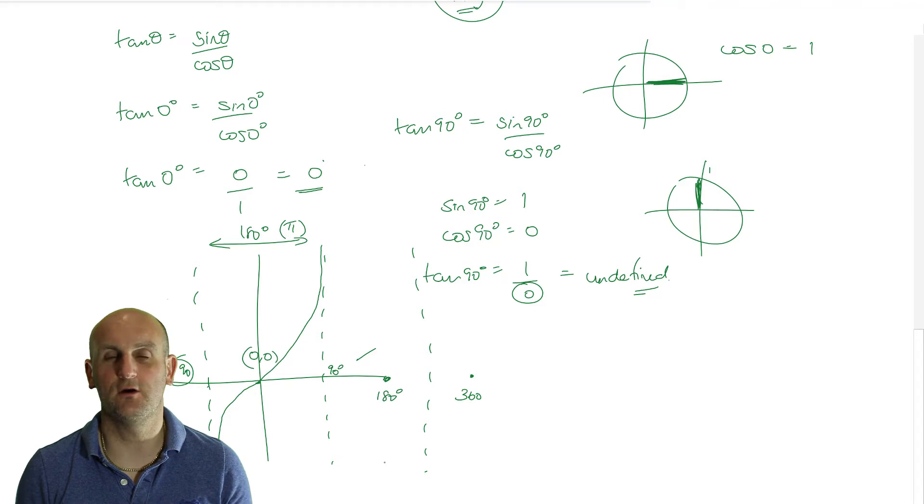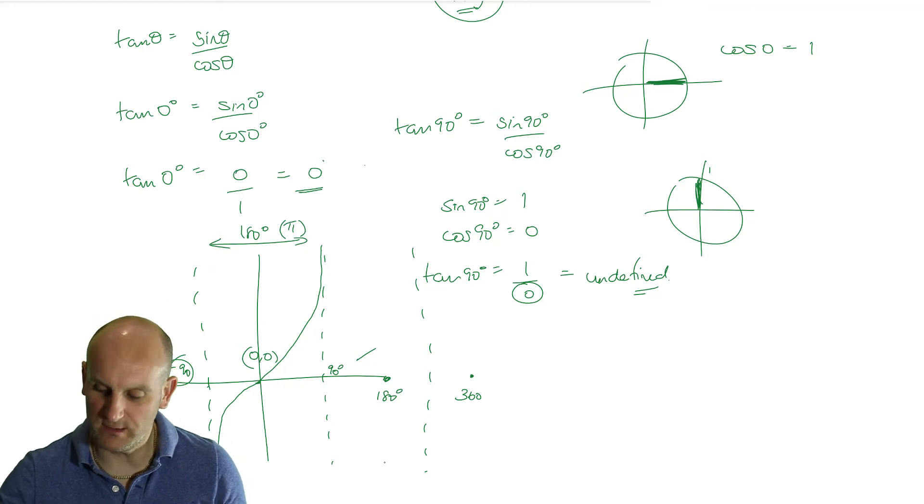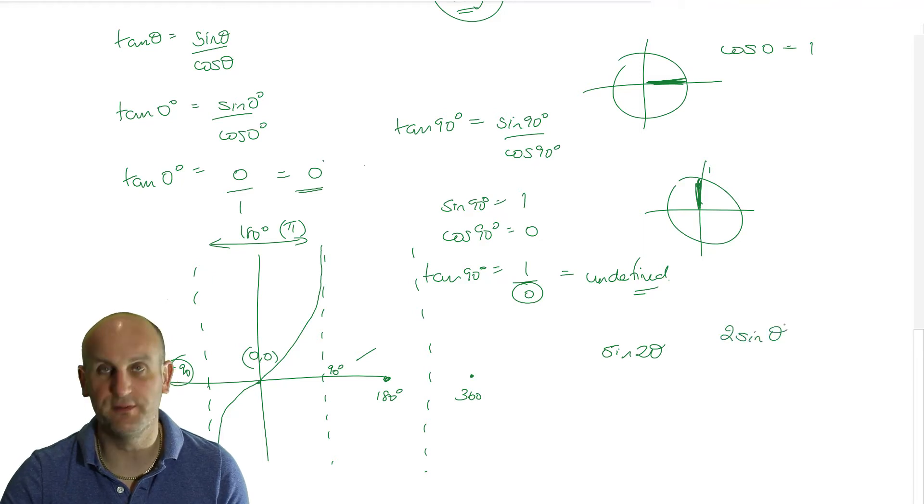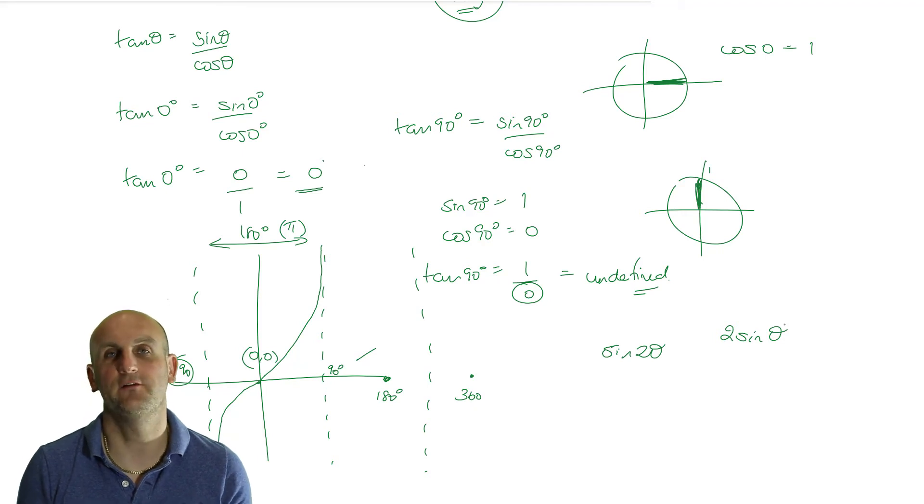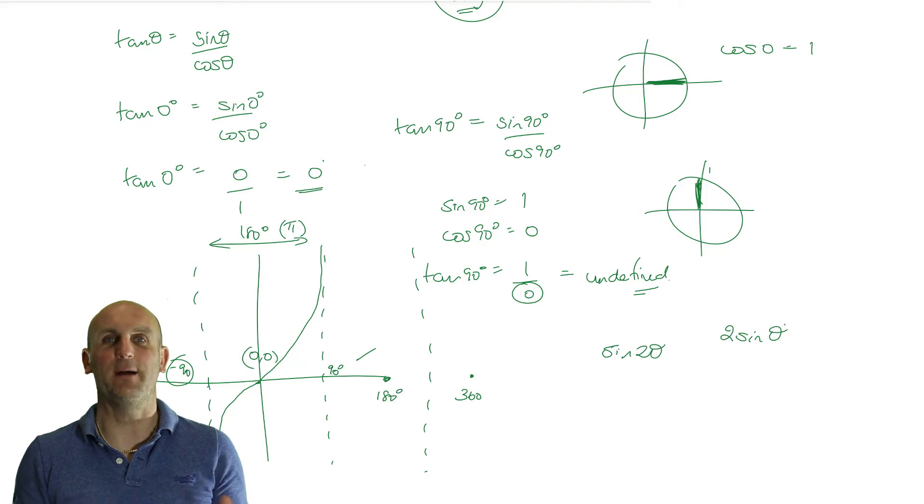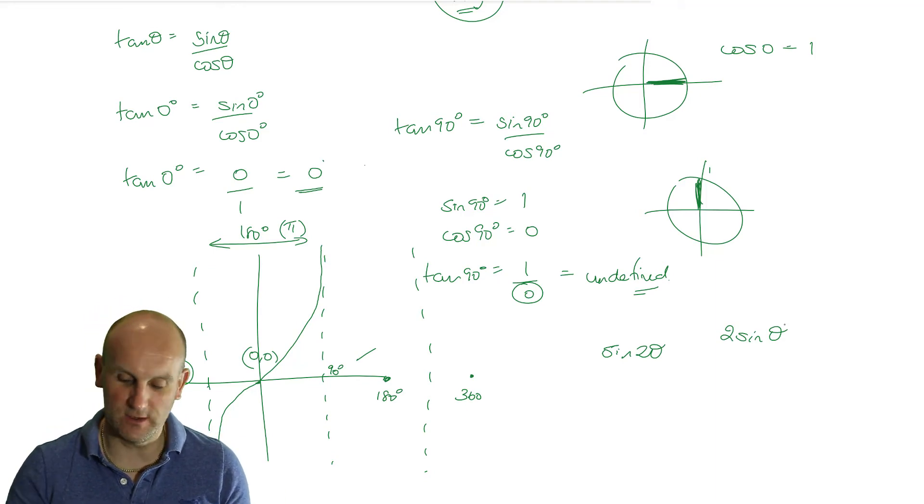Now my advice to you is go to Desmos.com and play with the sine, the cosine and the tangent graphs. Try and change some numbers. So for example, see what happens when you do sine of two theta. See what actually happens when you have two sine of theta. See what these values do, because I can guarantee you at some point later in these video series, and in fact later courses, the twos that are there, threes, values along these lines, are actually going to make a significant difference to your understanding. If you understand what happens, you are going to just ace this course.